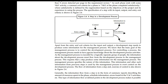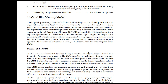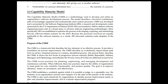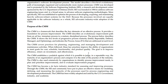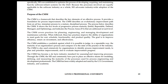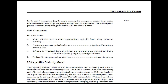The Capability Maturity Model is the main topic here. It is a method used to develop and define organizational software development processes, with five levels of an evolutionary path of increasing management and systematic measurement. The CMM was developed and promoted by the Software Engineering Institute, with recent development carried out for the U.S. Department of Defense from 1984 to address software engineering issues. The purpose of CMM is to describe the key elements of an effective process, providing a foundation for process improvement covering planning, engineering, managing, development, and maintenance.